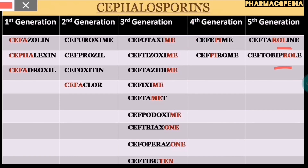The second generation cephalosporins are cefuroxime, cefprozil, cefoxitin, and cefaclor. You just have to remember the terms 'rox', 'pro', and 'fox' in order to remember the second generation cephalosporins. This is the trick to remember the classification of cephalosporins very easily, and I hope this trick has solved your problem of learning the classification of cephalosporins.